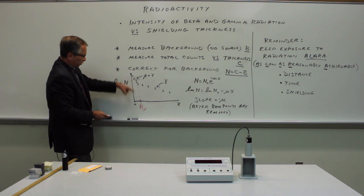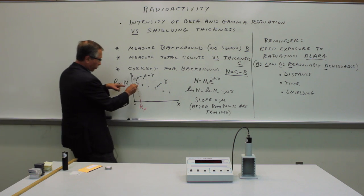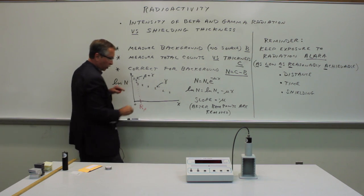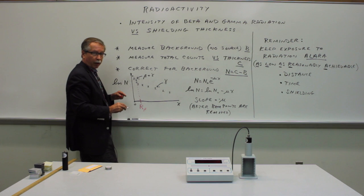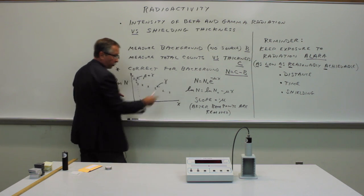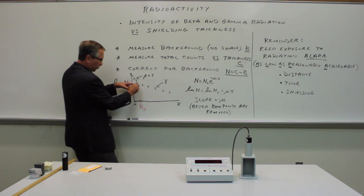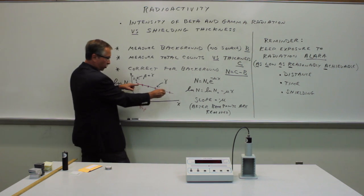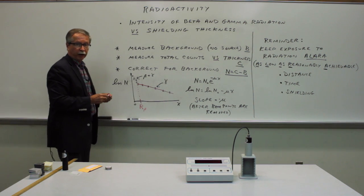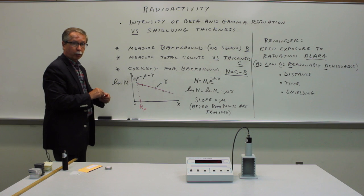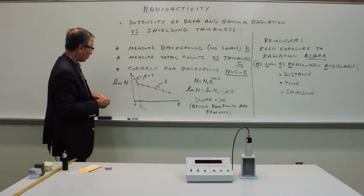And once the beta points are removed, what remains is a set of data representing only the gamma rays. That should follow the exponential function that we saw earlier for the absorption of gamma rays in material. So we can do a fit to this portion of the data, and the slope of that tells you the scattering probability for gamma rays in the same material.